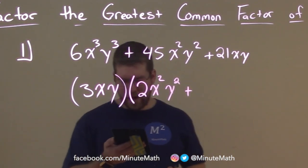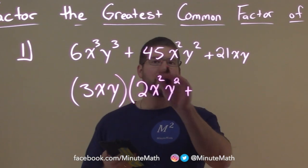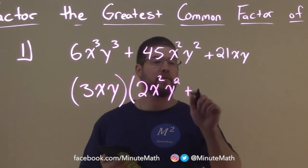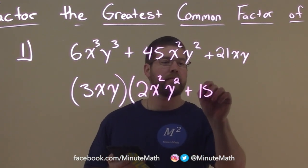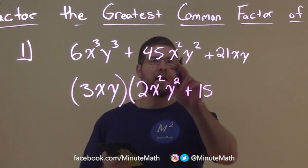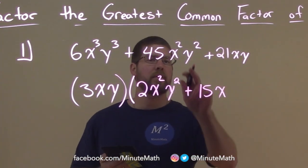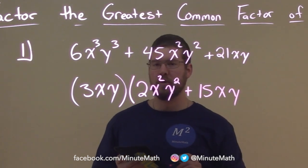Next term, we have 45. We pulled 3 out, so we're left with 15. 3 times 15 is 45. We pulled out x, leaving x left over. And we pulled out y, leaving y left over.